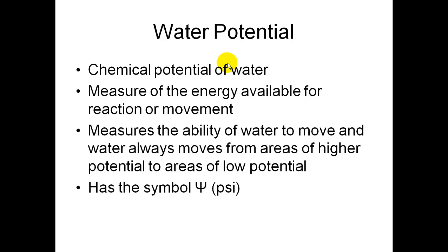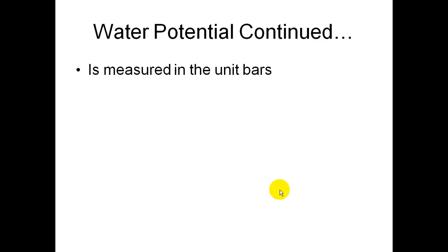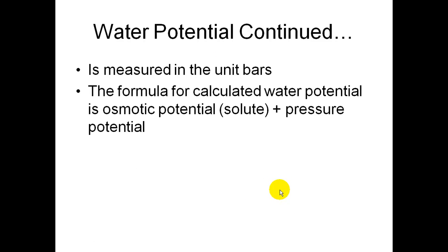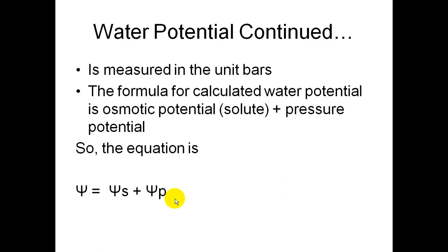Water potential has the symbol psi (a Greek letter) and is measured in units of bars. The formula for calculating water potential is: psi equals osmotic potential (psi-s, the potential of the solute) plus pressure potential (psi-p, where P stands for pressure). So: solute potential plus pressure potential equals water potential.